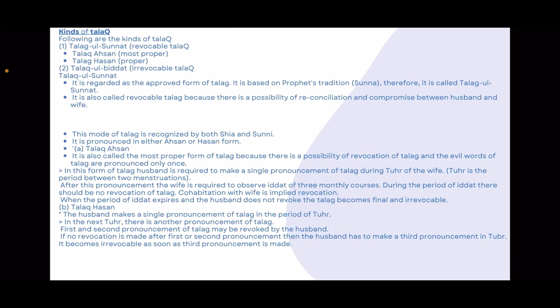In Talak-Hasan, the husband makes three pronouncements across successive periods of purity. The first and second pronouncements may be revoked by the husband. If no revocation is made after the first or second pronouncement, the husband proceeds to a third pronouncement, after which the Talak becomes irrevocable. The pronouncement of Talak is made three times total, and the third time is final.